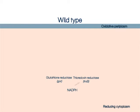NADPH provides the major pool of electrons in the cytoplasm, supplying electrons to the two reducing pathways.